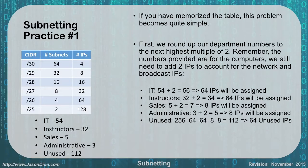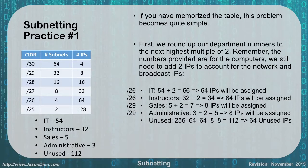So 64 IPs for IT becomes a slash 26. 64 IPs for the instructors becomes a slash 26. Eight IPs for sales and administrator are both going to become a slash 29. And the unused portion at 64 becomes a slash 26 as well. And that's how you solve a problem like that.